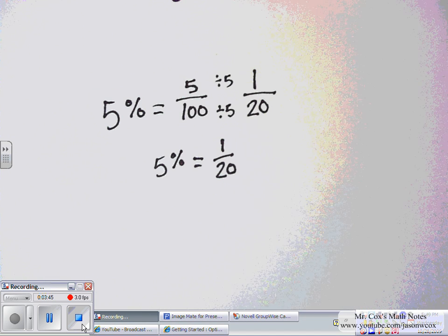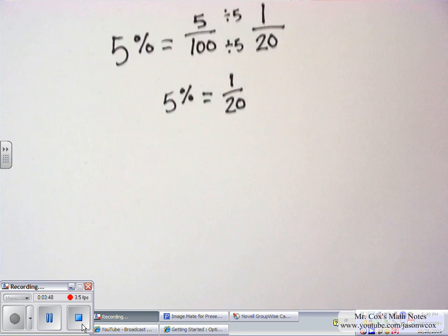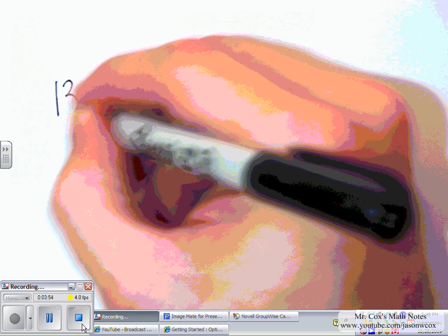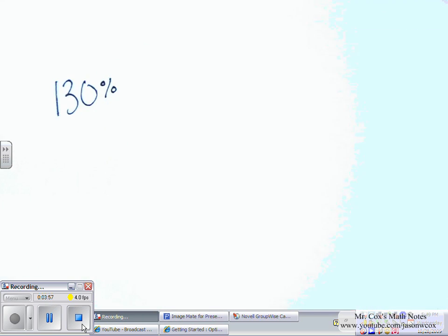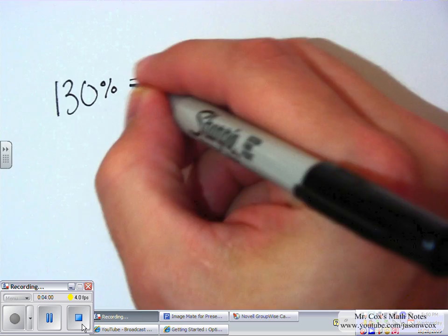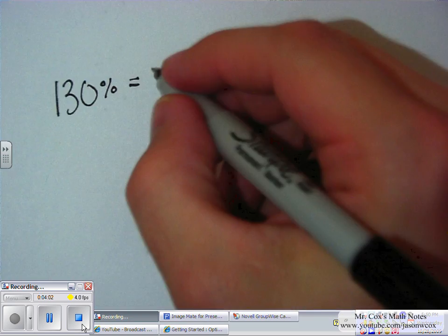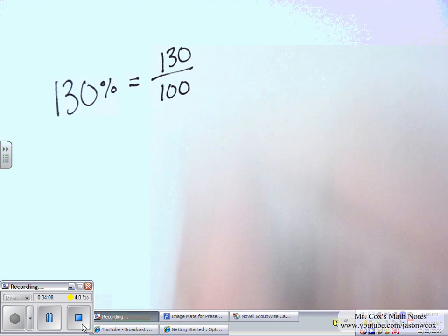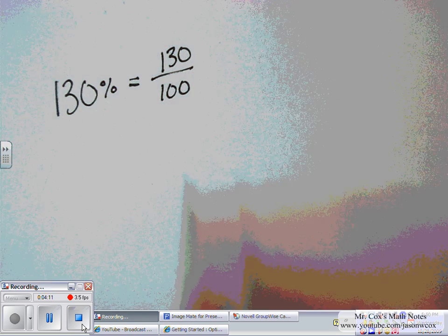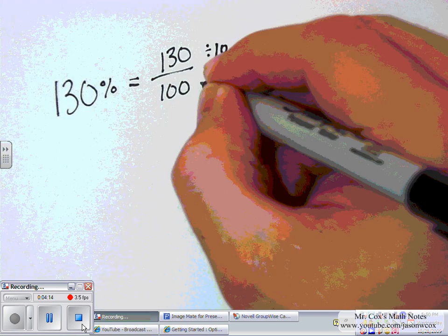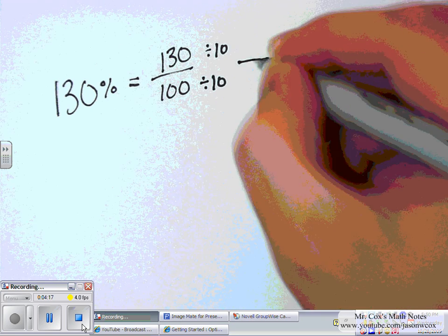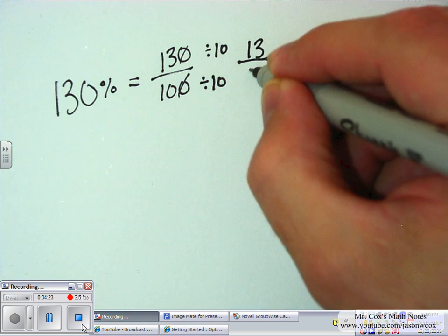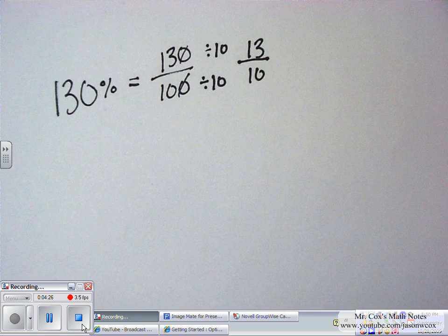Let's see what happens if we have a percent larger than 100%. Like 130%. Again, that's still going to equal 130 over 100. So the easy number I can divide both of those by is 10. 130 divided by 10. Well, I can just get rid of the zeros here. So that would leave me 13 over 10. And I can't reduce anymore.